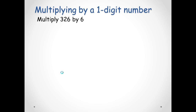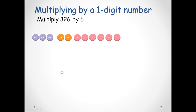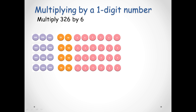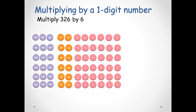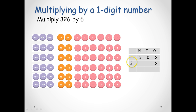Let's multiply 326 by 6. We know that multiplication is repeated addition, so we have 326 and we can multiply or repeat the set 6 times. This is how we write it in an algorithm: 326 times 6. Let's multiply by the 6 ones — 6 ones multiplied by 6 would give us 36 ones.